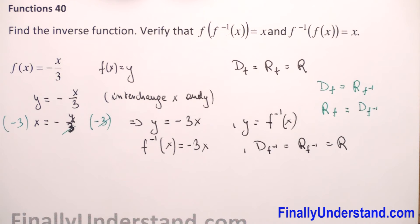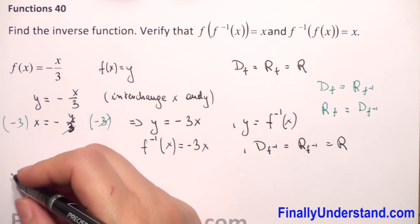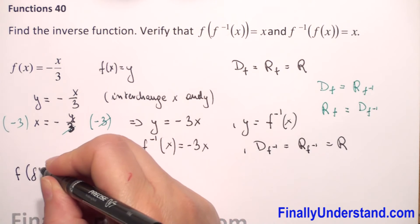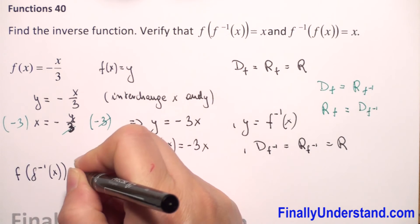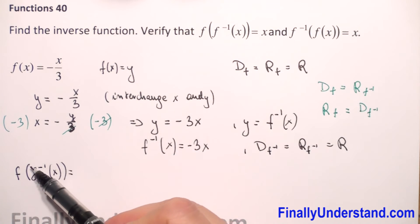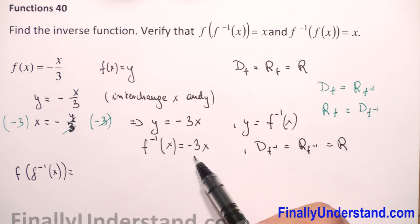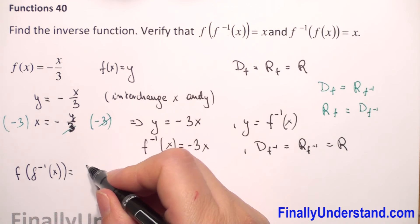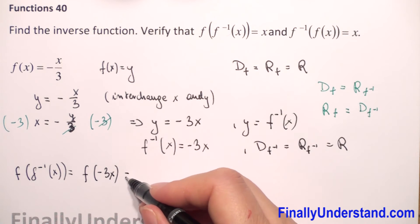Now we check the two compositions. First, we rewrite f of f-inverse of x. We substitute f-inverse of x, which is negative 3x, into the formula for f.